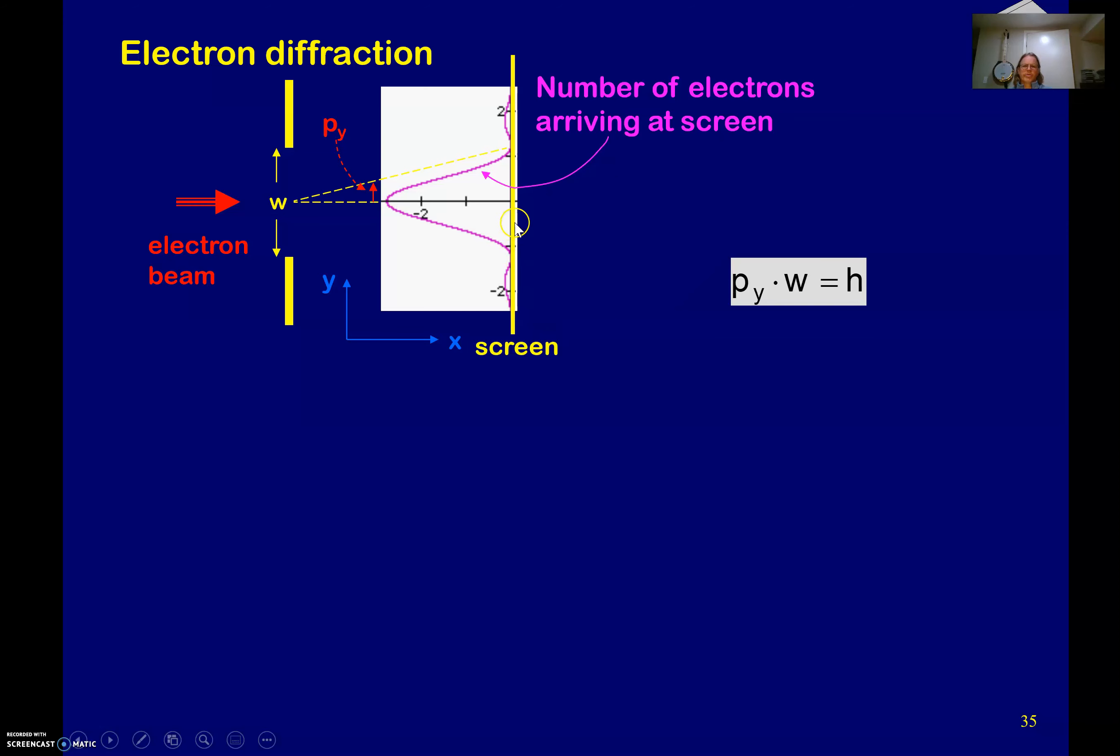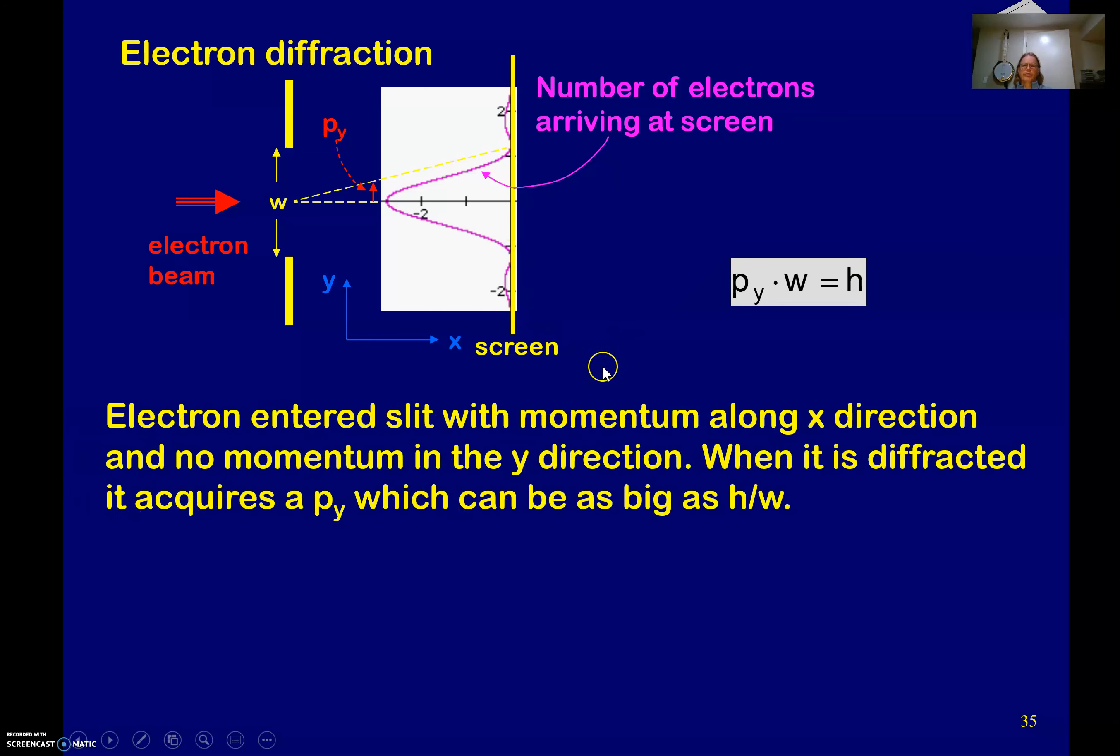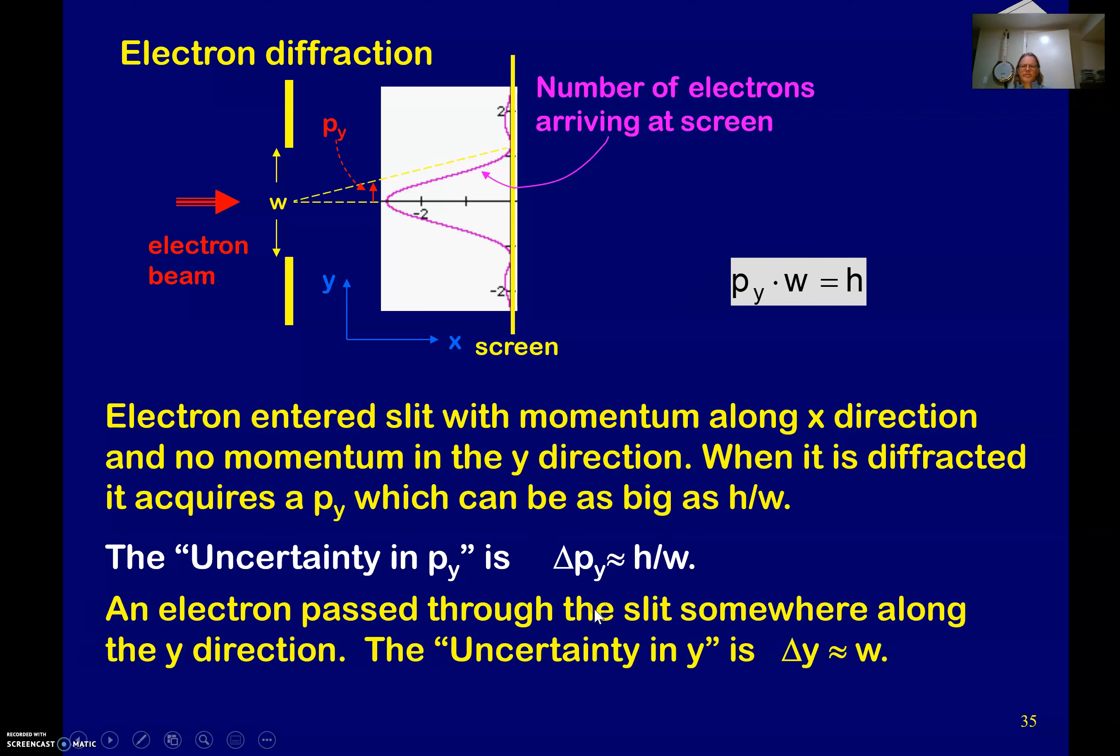So number of electrons arriving at the screen in one direction, you know, the momentum along the X direction, no momentum in the Y direction. When it is diffracted, it acquires a momentum in the Y, which can be as big as, there you go. So the uncertainty in the Y is, this is the iffy part. So electron passes through this, it's somewhere along the Y direction, the uncertainty in the Y is, there you are. So uncertainty is along, like with the width.